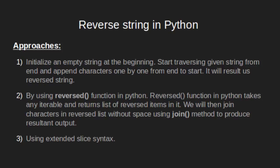The first approach is very simple. We will initialize an empty string at the very beginning and then start traversing our string from end to start, meaning in reverse order. We will use a for loop and one by one pick each element from end to start, concatenating all these characters together to produce the resultant reversed string.